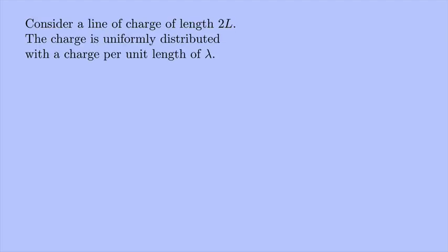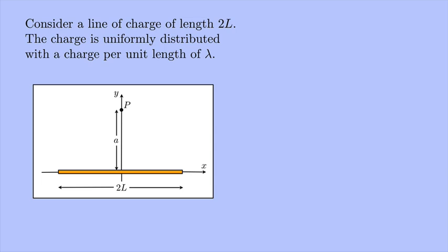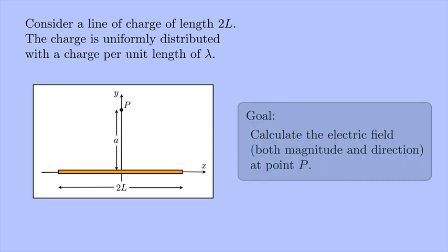Consider a line of charge of length 2L. The charge is uniformly distributed with a charge per unit length of λ. So here's a picture of this line of charge. The goal is to calculate the electric field, both the magnitude and the direction, at point P, which is a distance a above the center of the line.